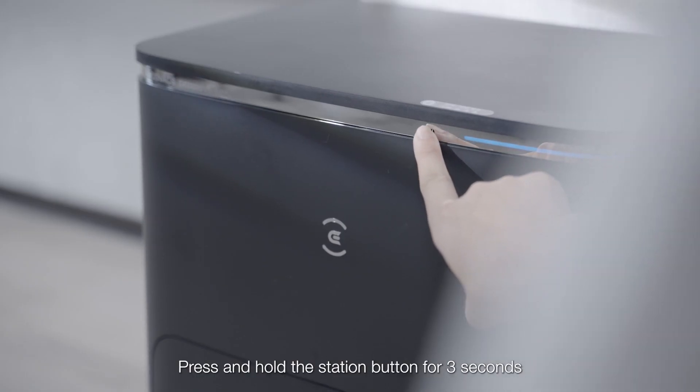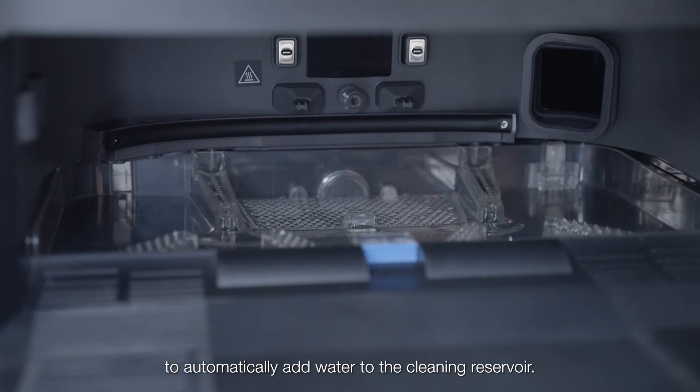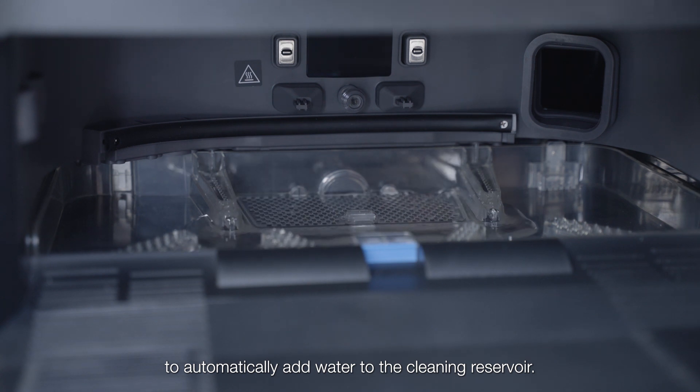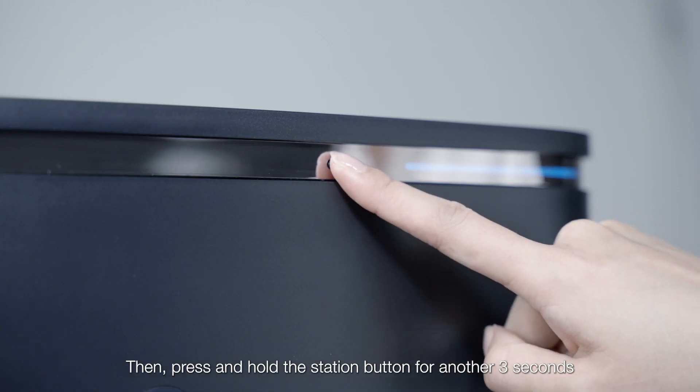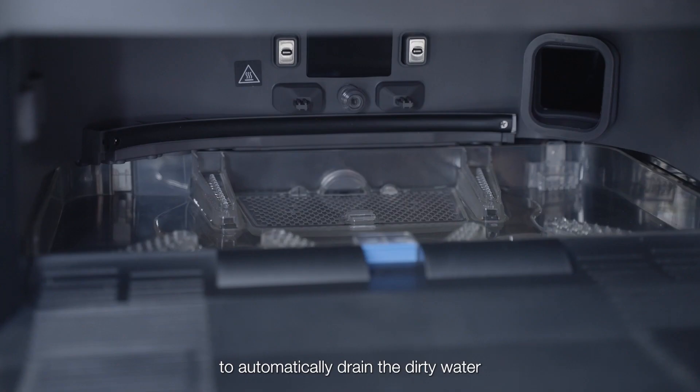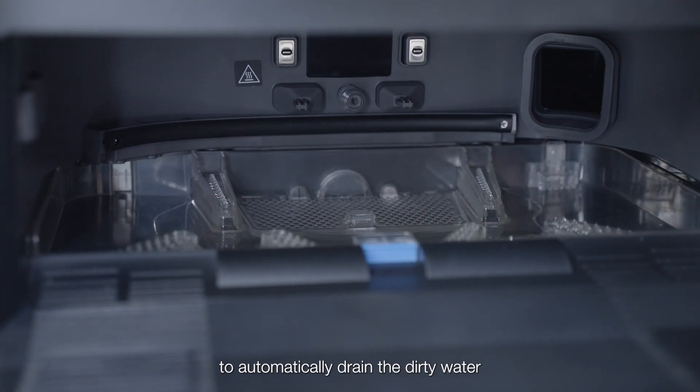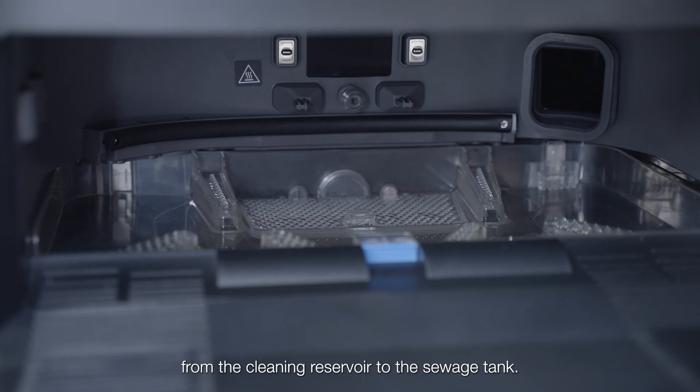Press and hold the station button for three seconds to automatically add water to the cleaning reservoir. Then press and hold the station button for another three seconds to automatically drain the dirty water from the cleaning reservoir to the sewage tank.